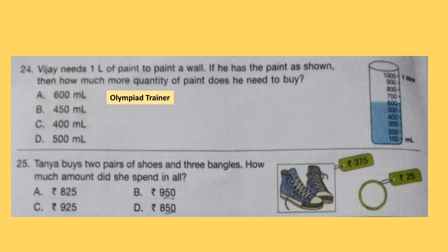Question 24. Vijay needs 1 litre of paint to paint a wall. If he already has the paint as shown, how much more quantity of paint does he need to buy? Vijay already has 600 ml. So how much does he need for 1 litre? He needs 400 ml more to complete 1 litre. So option C is the answer: 400 ml.